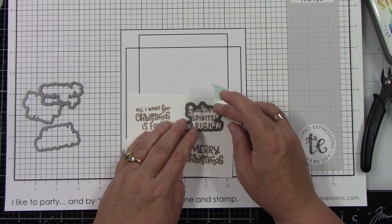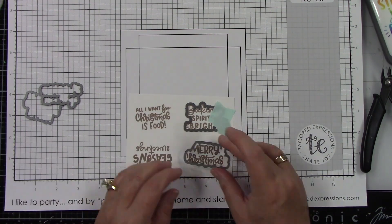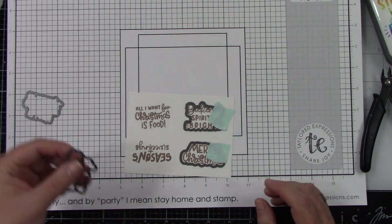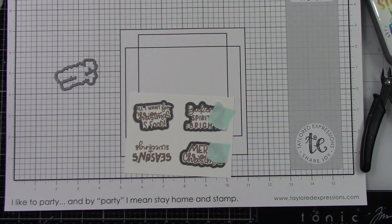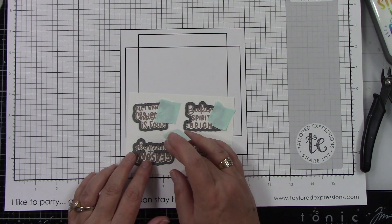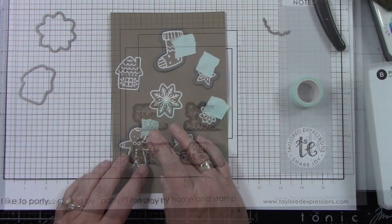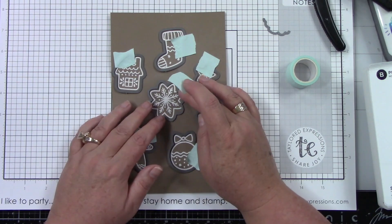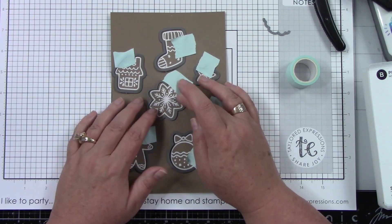I'm going to get that nice and inked up. Let's use the coordinating dies. I can just tape those in place and run that through the die cut machine. Then of course I'm going to use the coordinating dies for the Baking Spirits Bright stamp set. There's two sets of dies - you have the smaller ones that go right around the images and then a shadow piece that's a little bit bigger.